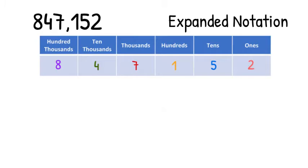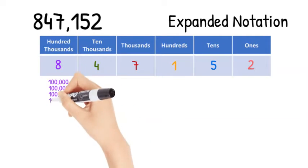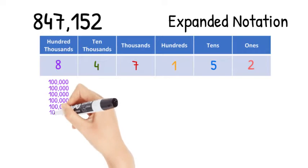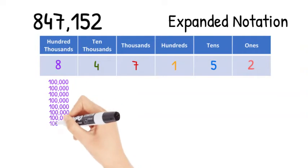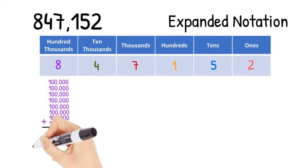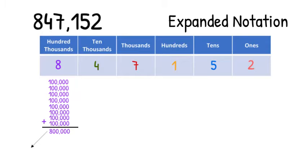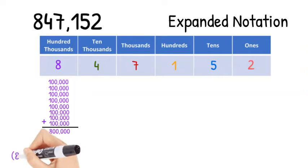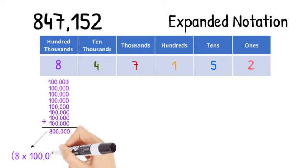Let's start with the hundred thousands place. 8 hundred thousands is actually the equivalent of 8 individual 100,000s. Another way to say this is 8 times 100,000 equals 800,000. When we write this in expanded notation, we will show that 8 multiplied by 100,000 is the same as 800,000.